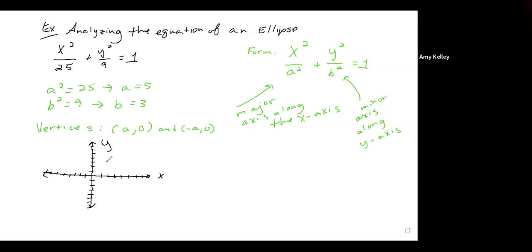My vertices at negative 5, 0 and 5, 0. So right here, I'll call this V1 for vertex 1, and over here, V2 for vertex 2.